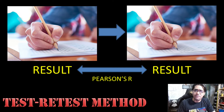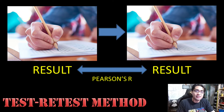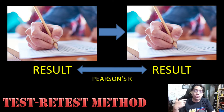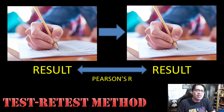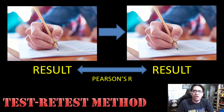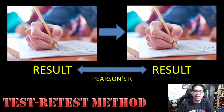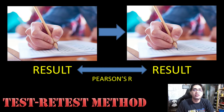There are obvious problems with the test-retest method. It's not always easy to administer the same test twice due to time or budget constraints. It's also possible that students will remember the test from the first administration and adjust accordingly during the second, thus tainting the results. Is there another way to measure reliability by administering the test just once?